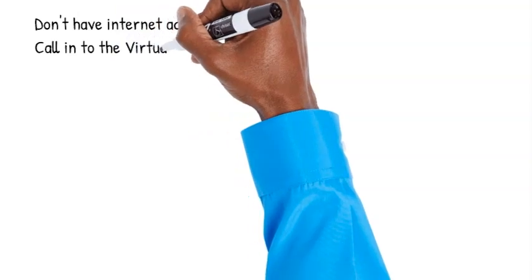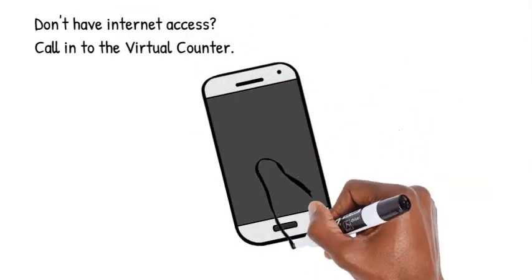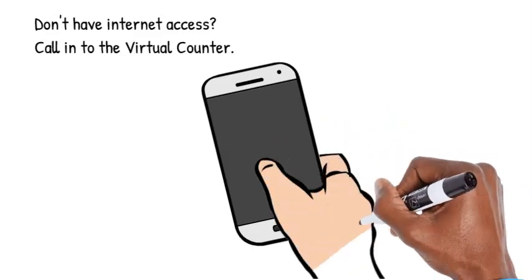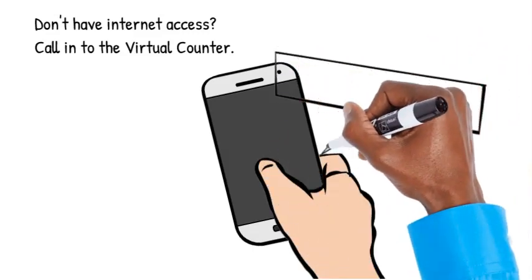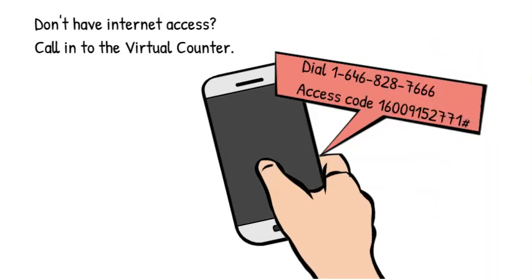If you don't have internet access, you can call into the virtual counter. Dial 1-646-828-7666 and use access code 1-600-915-2771.